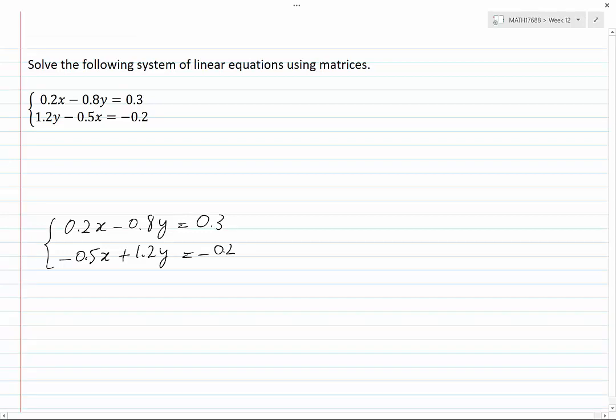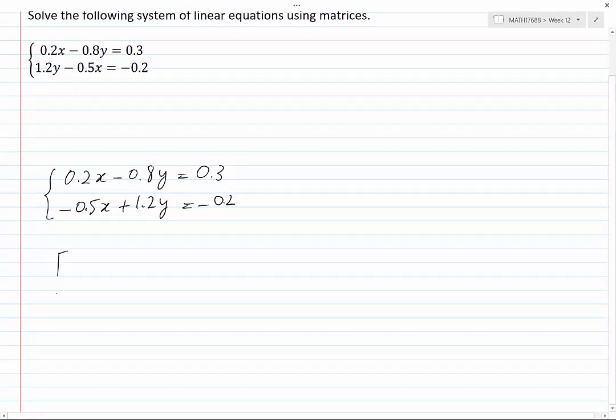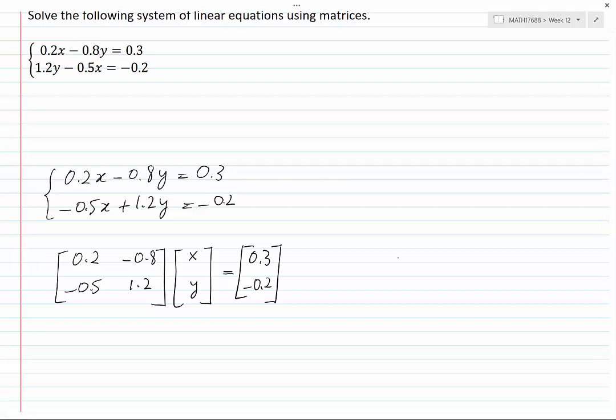Now we can rewrite this as a matrix equation. The coefficient matrix, which includes the coefficients of x and y in the order they appear in the system, would be 0.2, minus 0.8, minus 0.5, and 1.2. The unknown vector would be x and y. This is equal to the known vector 0.3 and minus 0.2.